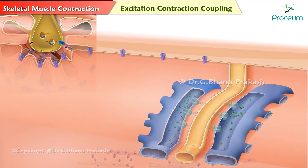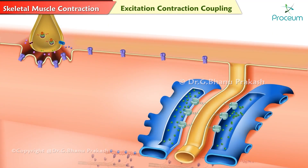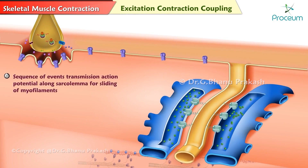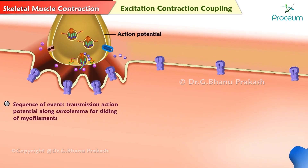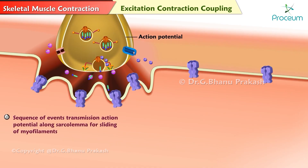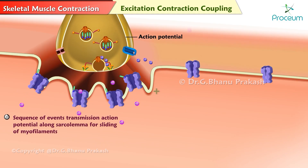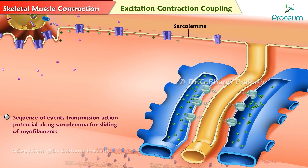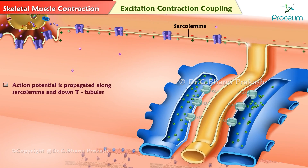Excitation-contraction coupling is the sequence of events by which transmission of an action potential along the sarcolemma leads to sliding of myofilaments. The events at the neuromuscular junction set the stage for excitation-contraction coupling by providing excitation. Released acetylcholine binds to receptor proteins on the sarcolemma and triggers an action potential in a muscle fiber, which is propagated along the sarcolemma and down the T-tubules.